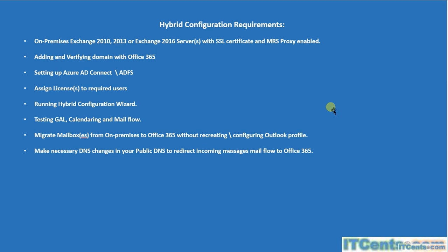The interesting part will be configuring the Hybrid Configuration Wizard. The wizard will make all required changes — creating appropriate connectors, federation trust, and everything needed. It will enable my on-premises organization as an extension of my Office 365 domain, making them essentially one entity with a centralized global address list, calendar sharing, mail flow, and management. I will be able to manage Office 365 configuration from the Office 365 tab within my on-premises Exchange Admin Center.